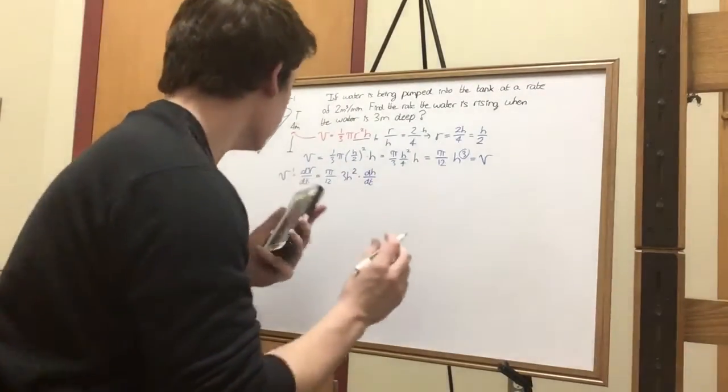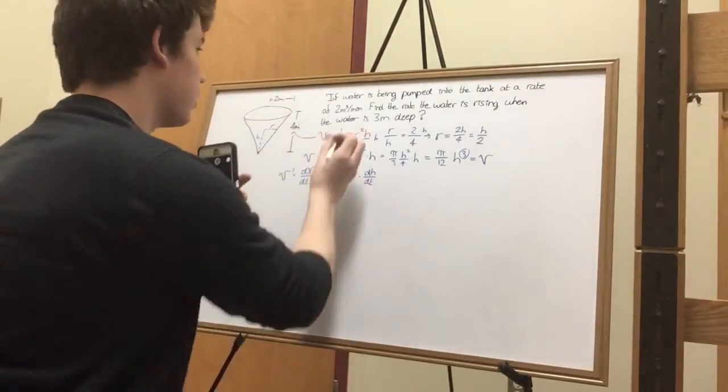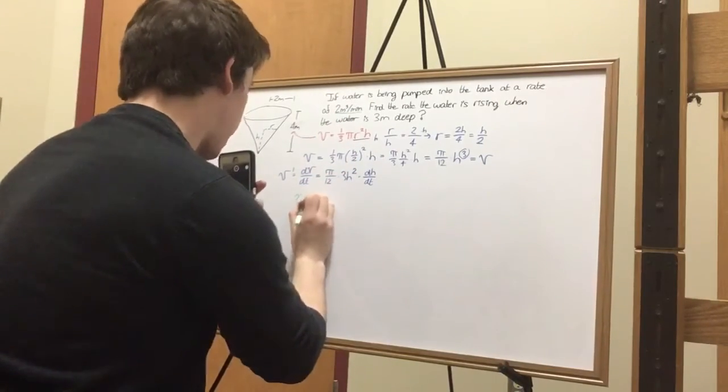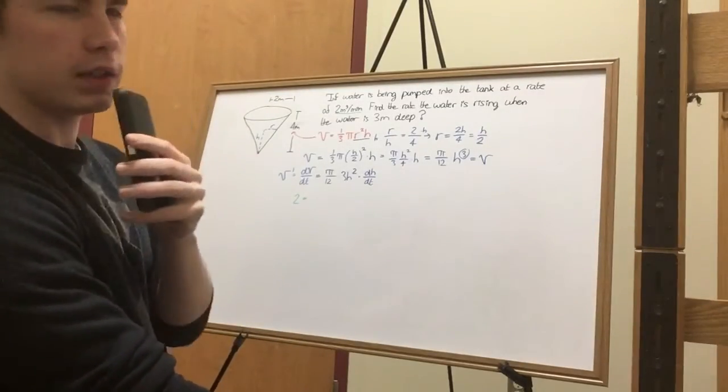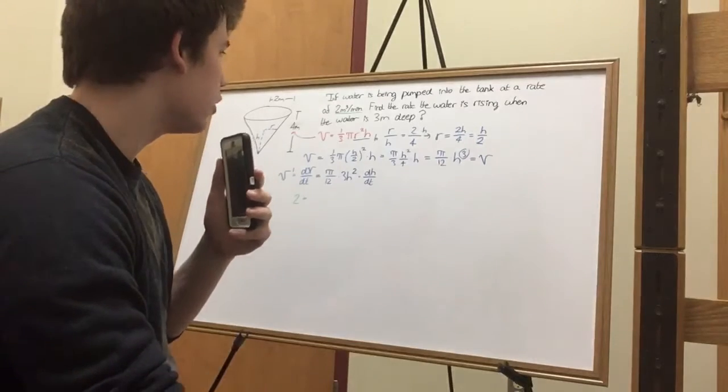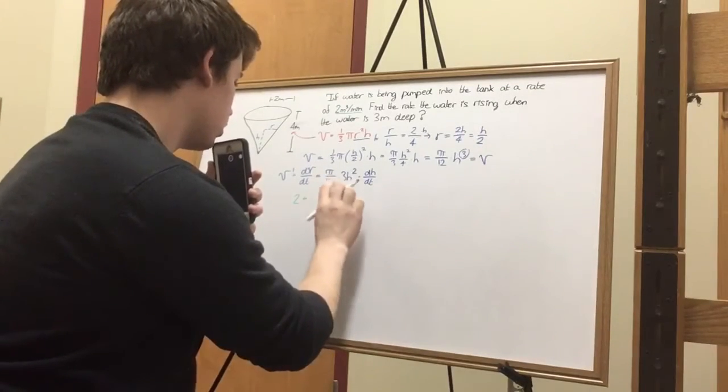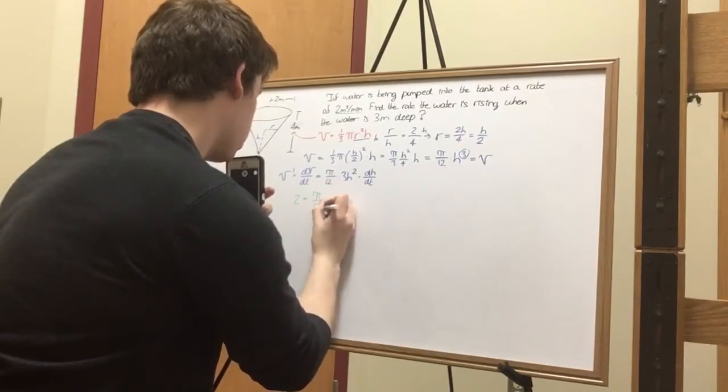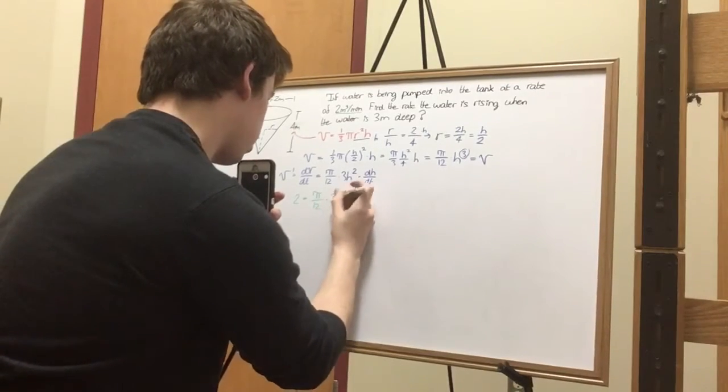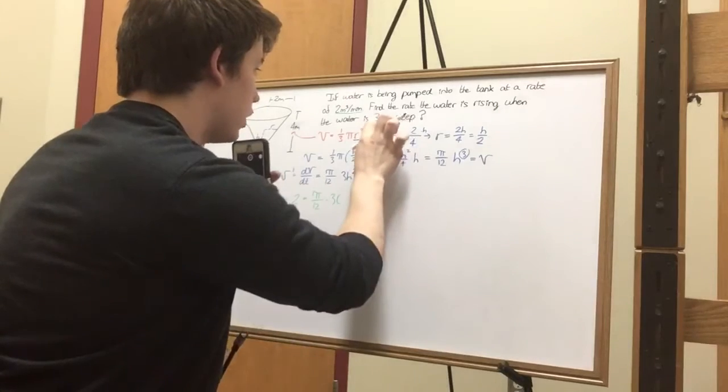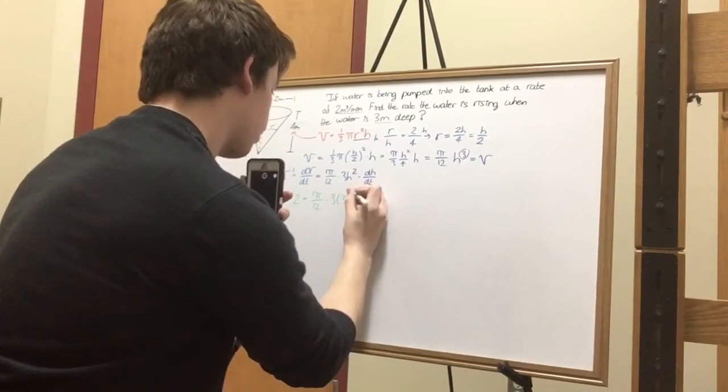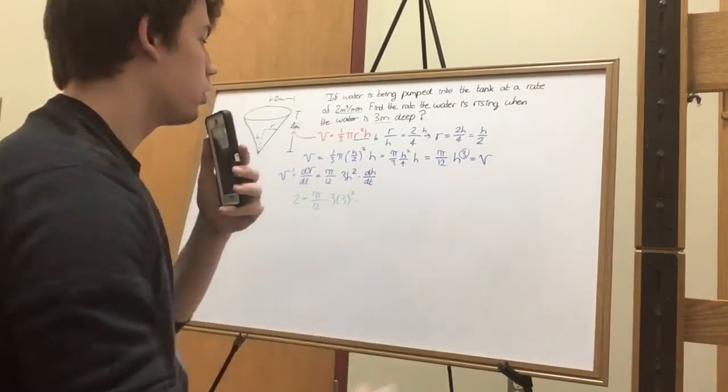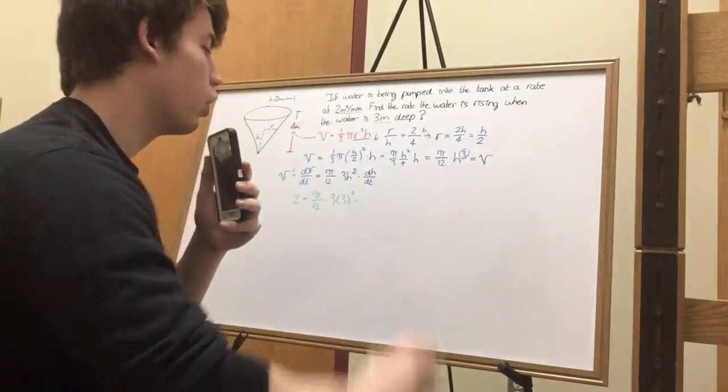That's a plug. Okay, so this number right there, it's equal to 2, whatever units by the way. That's a physics thing. Math, you don't really care too much. So 2 equals pi over twelve multiplied by three, h right there, h, three squared, multiplied by our changing rate of change of height over time, which is what we're finding.